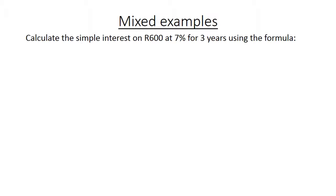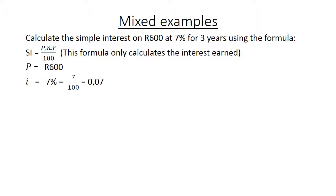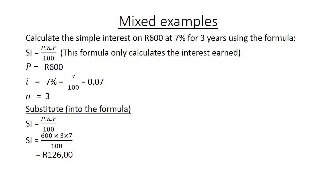Mixed examples. Calculate the simple interest on 600 Rand at 7% for 3 years using the formula. This formula only calculates the interest earned. 600 Rand, the i is 7% the interest, n equals 3 because it is 3 years. Now we are going to substitute into the formula. 600 Rand times 3 times 7 divided by 100, and it gives you 126 Rand. So the interest earned is 126 Rand on this investment.